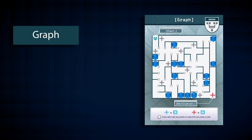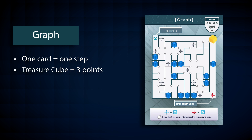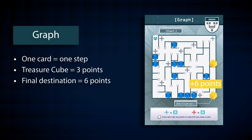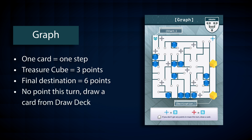Graph. This is a graph board. You can earn points by winning the treasure cubes or finishing the maze. For each graph card you play, you can move one step from one node to another in the maze. If you arrive at a node with a treasure cube, you can take it and get three points. Once the treasure cube is taken from a node, players do not need to stop there again. When you arrive at the final destination, you can get six points. Lastly, if you could not get any points in this turn — that is, you didn't get any treasure cubes and didn't reach the destination — you can draw a card from the draw deck.